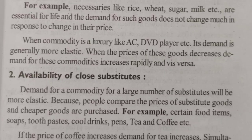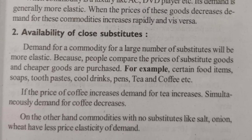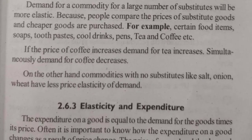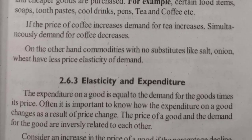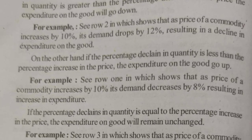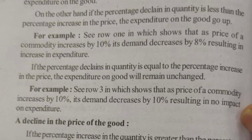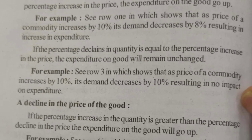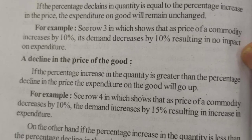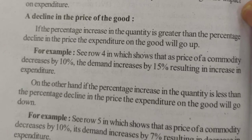Another factor is the availability of close substitutes. For example, Colgate has close substitutes like Colgate Salt, and other companies like Patanjali and Dabur. This availability of close substitutes affects the price elasticity of demand. We also have elasticity and expenditure, which involves the rectangular hyperbola — a straightforward topic.